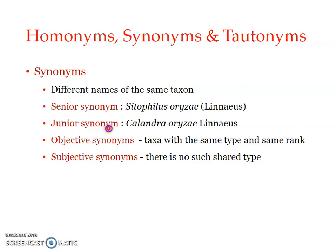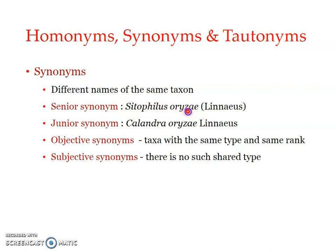An example is the rice stored grain pest: Sitophilus oryzae, given by Linnaeus, and later the same species was given the name Calendra oryzae, also by Linnaeus. Since Sitophilus oryzae was the first given name, it is considered the senior synonym and is the name used by scientists. Calendra oryzae is not considered valid because it is a junior synonym.